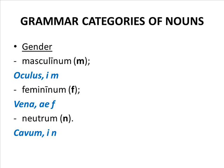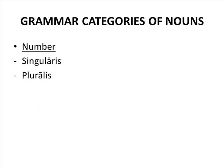These gender signs are given in the dictionaries, where nouns are presented in the so-called dictionary form. In Latin there are two numbers, singular and plural. The number of the noun in Latin shows whether we speak about one thing or more than one. The indications of plural are more numerous than in English and are determined by the gender and declension.